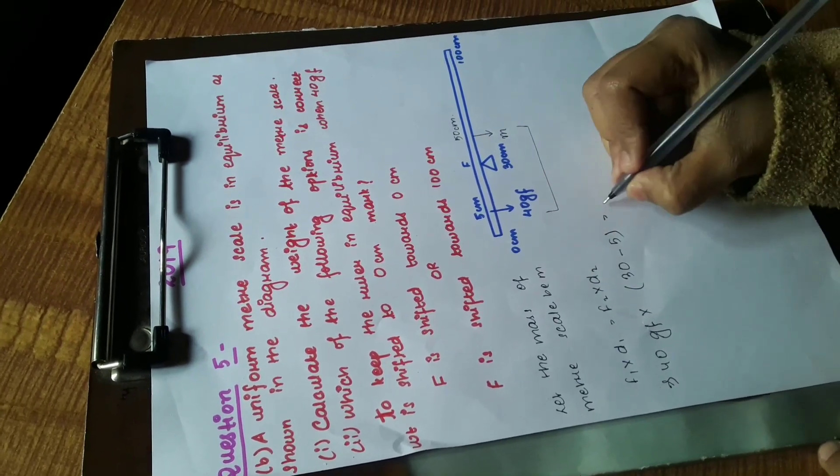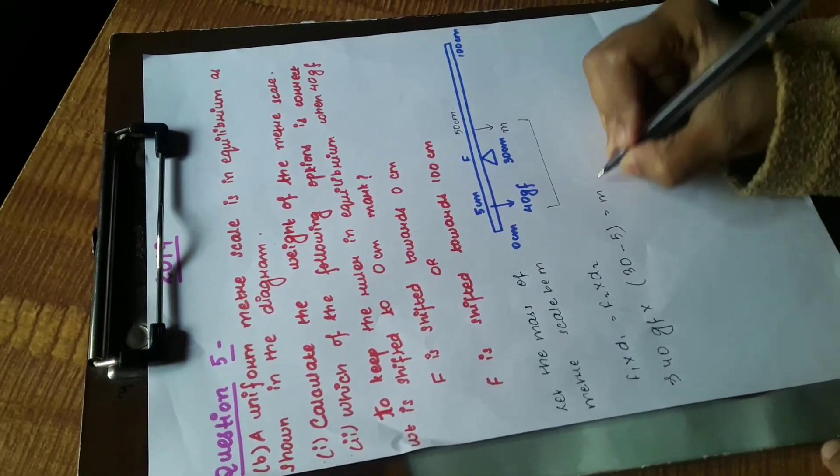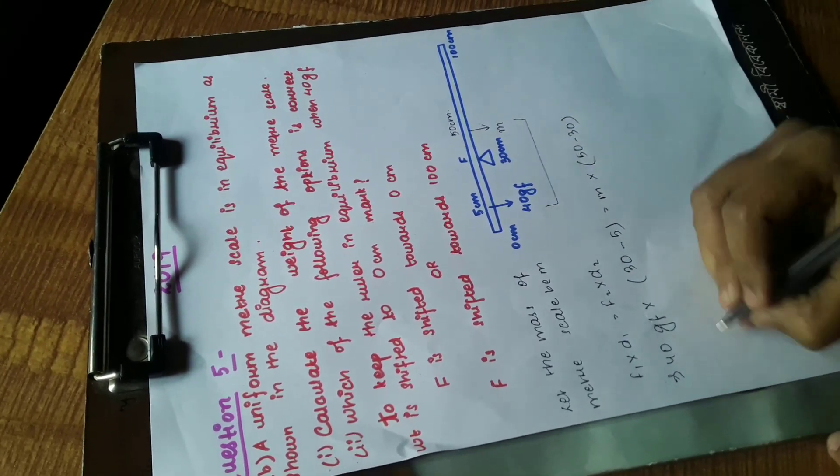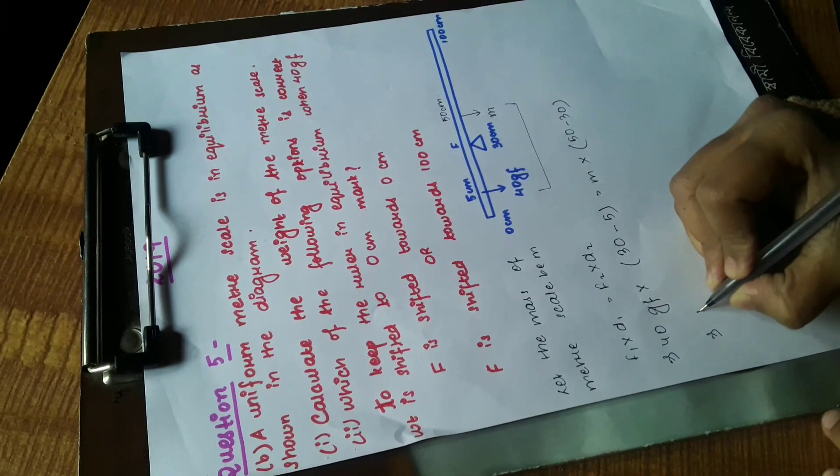Very simple. And F2, or the mass, we don't know yet. And D2 will be 50 minus 30 centimeter. Simple calculation. So let's just solve it.